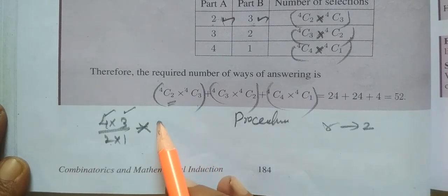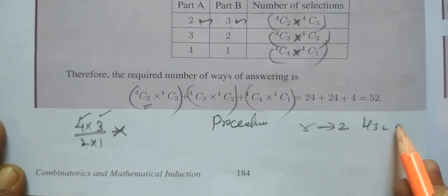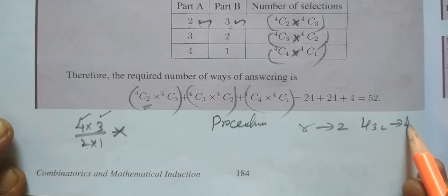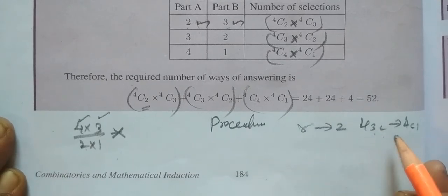4C3 is nothing but 4C1. That is correct. 4C1. NCR equals NC(N minus R). Under this formula, 4C3 equals 4C1.